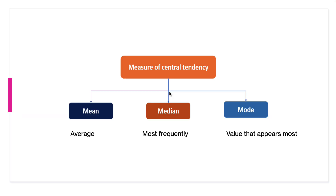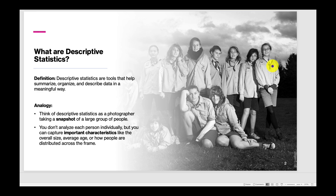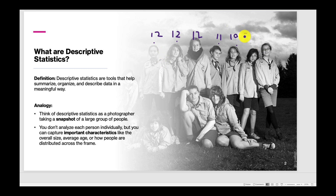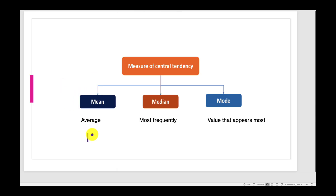So when we're talking about central tendencies, we're talking about the mean — and that is the average. If I look at this group and select five individuals with ages 12, 12, 12, 11, and 10, I would get a mean average age of 11.4. So we can calculate the average age of these individuals — that's what the mean is. It's the average, and in this case that's 11.4.